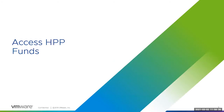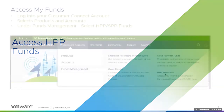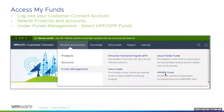To access and use the credits contained within the HPP funds, you will need a Customer Connect account. To access HPP funds, log into your Customer Connect account, select Products and Accounts, and under the Fund Management section, select the HPP SPP Funds option.